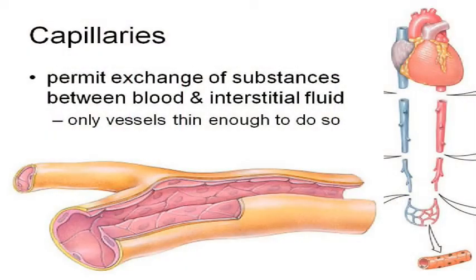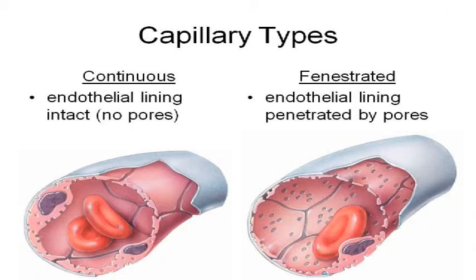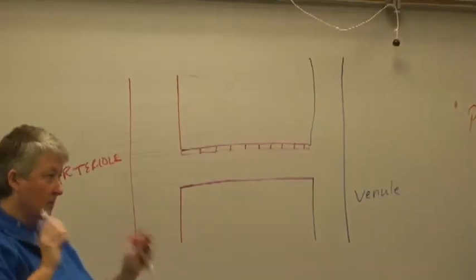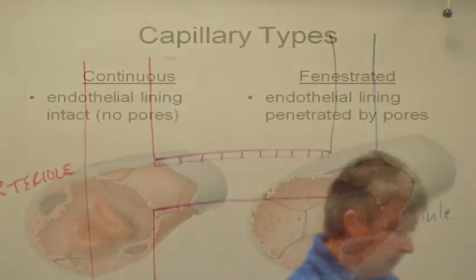Because you've only got this single layer of flat cells, that's thin enough to allow exchange to occur. There are several different types of capillaries. Most of the capillaries in your body are what we call continuous capillaries, which means that their endothelial cells are right next to each other — no gaps in between them, no pores in the endothelial cells. Just an endothelial cell next to an endothelial cell, all the way down. Most of the capillaries in your body are these continuous capillaries.